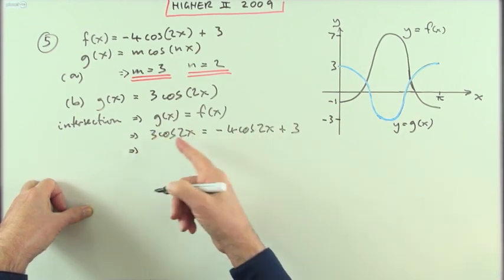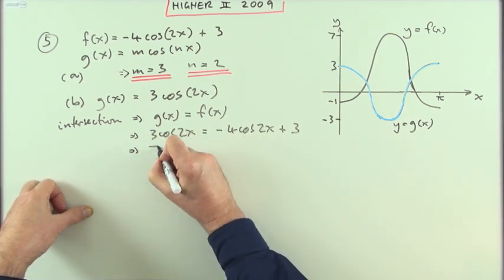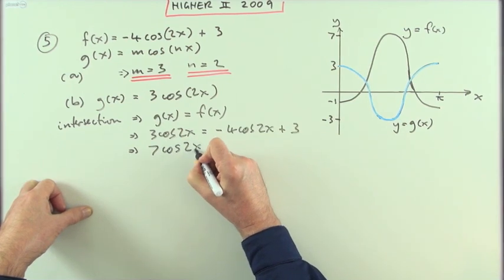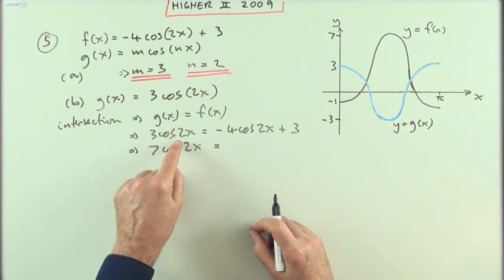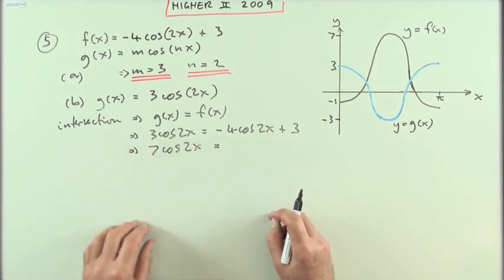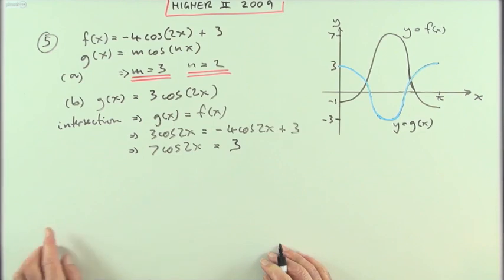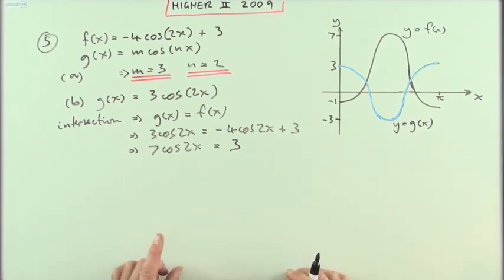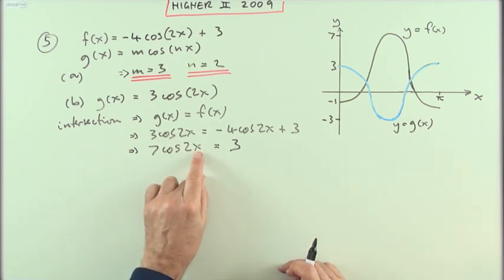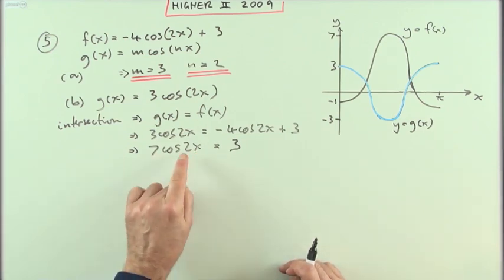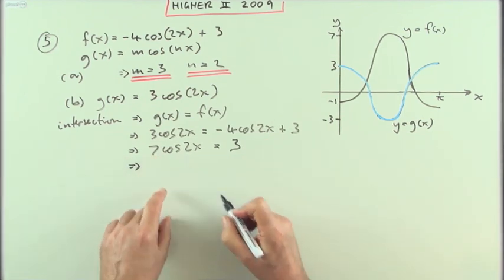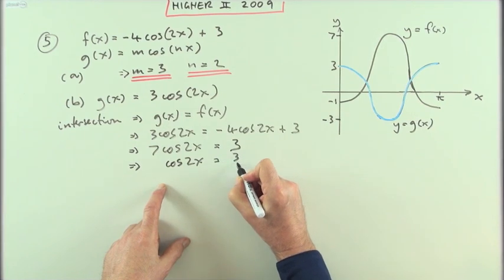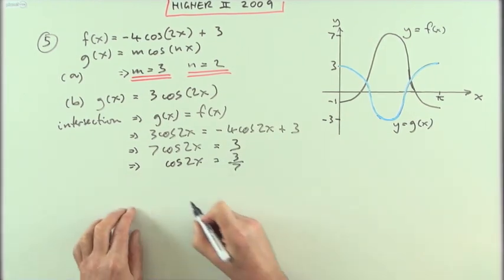I can simply bring those two cosine terms together. Bringing the negative four over gives me seven cos(2x) equals three. I wouldn't have been able to do that if one had 2x and the other had single x — then it would have been a double angle equation. But since there's only one mention of x, I can solve this linearly. The first thing to do is get rid of the seven — it was multiplying, so divide the other side by seven.